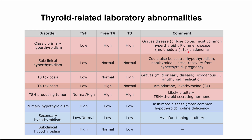Lastly is toxic adenoma — one large nodule. To summarize the three types of classic primary hyperthyroidism by gross pathology: Graves' disease is diffusely enlarged, Plummer disease is enlarged and nodular, and toxic adenoma is one big nodule.